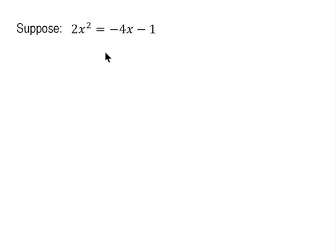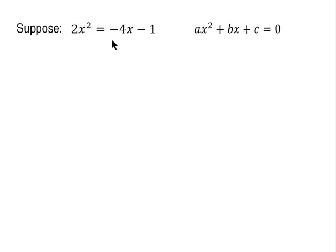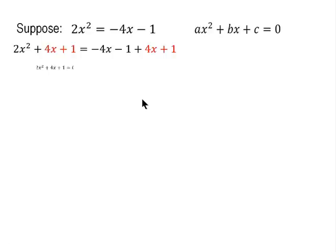Next example: suppose 2x² = -4x - 1. Notice this is a quadratic equation but not written in standard form. We need to convert it to ax² + bx + c = 0 so we can identify a, b, and c. We add 4x and 1 to both sides: 2x² + 4x + 1 = 0. On the right, -4x + 4x = 0 and -1 + 1 = 0, so the equation is now in standard quadratic form.